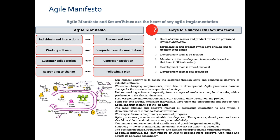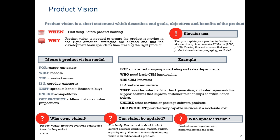The gap in understanding customer demands is eliminated through face-to-face conversation in Agile. The next topic is Product Vision. Product Vision is the starting point — it is a single-liner, a short statement that indicates the goals, objectives, and benefits. Writing down the product vision requires experience and acts as a summary of what we need and why we need it.